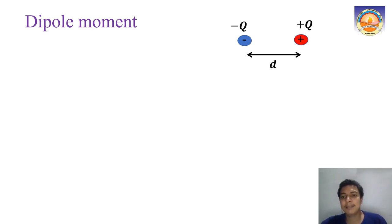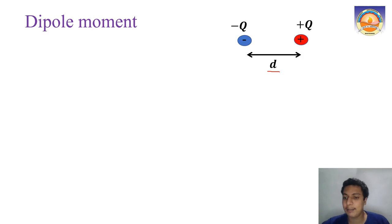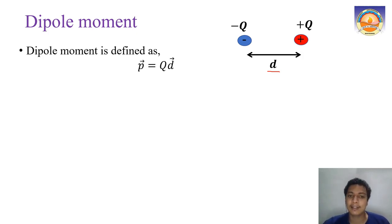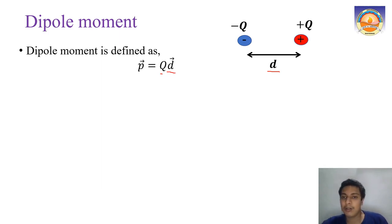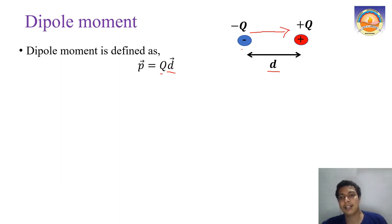The dipole moment p is defined as charge times the distance between the two charges: p = q·d. The direction of d is taken from -q to +q, so the dipole moment vector points from the negative to the positive charge.